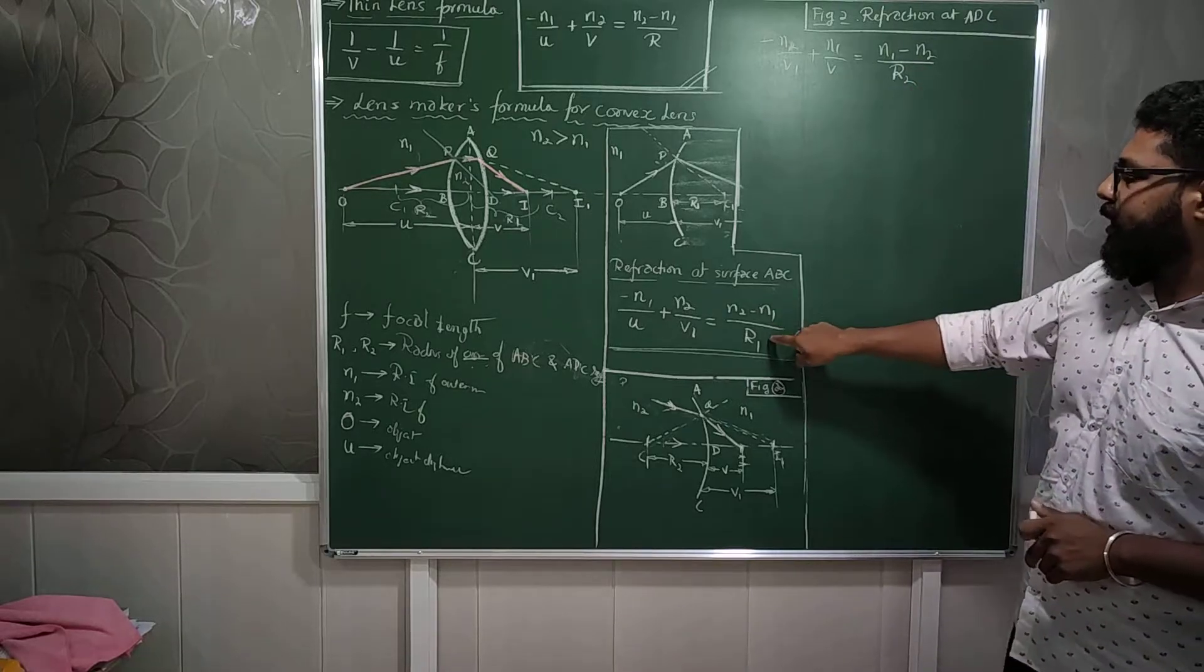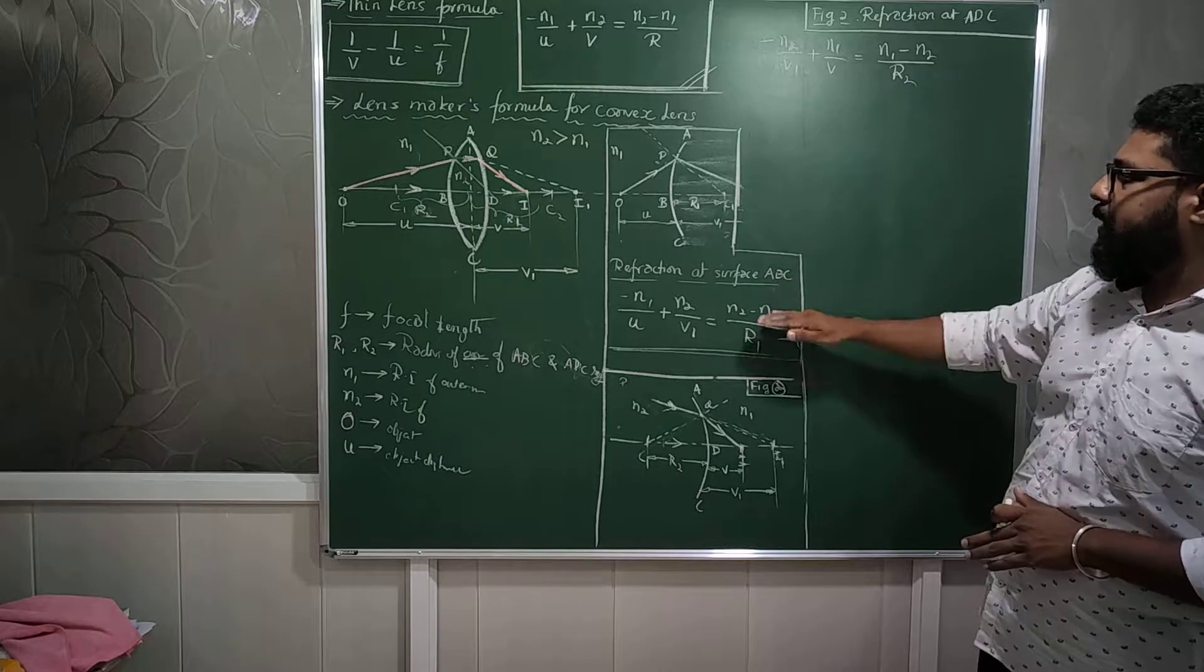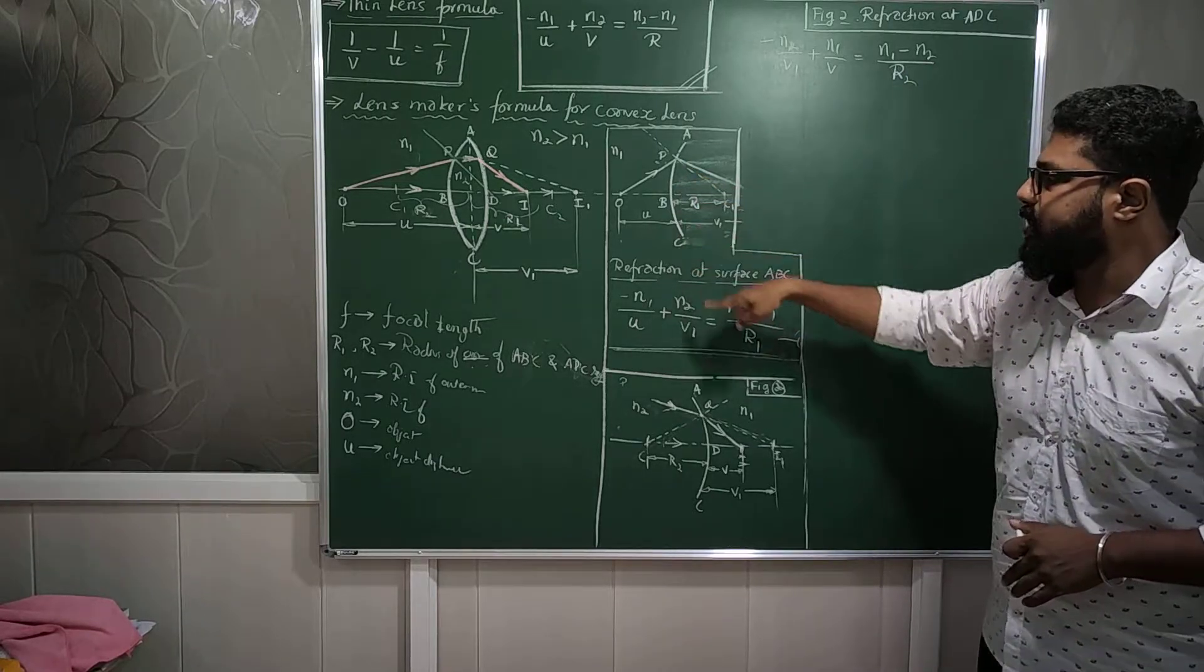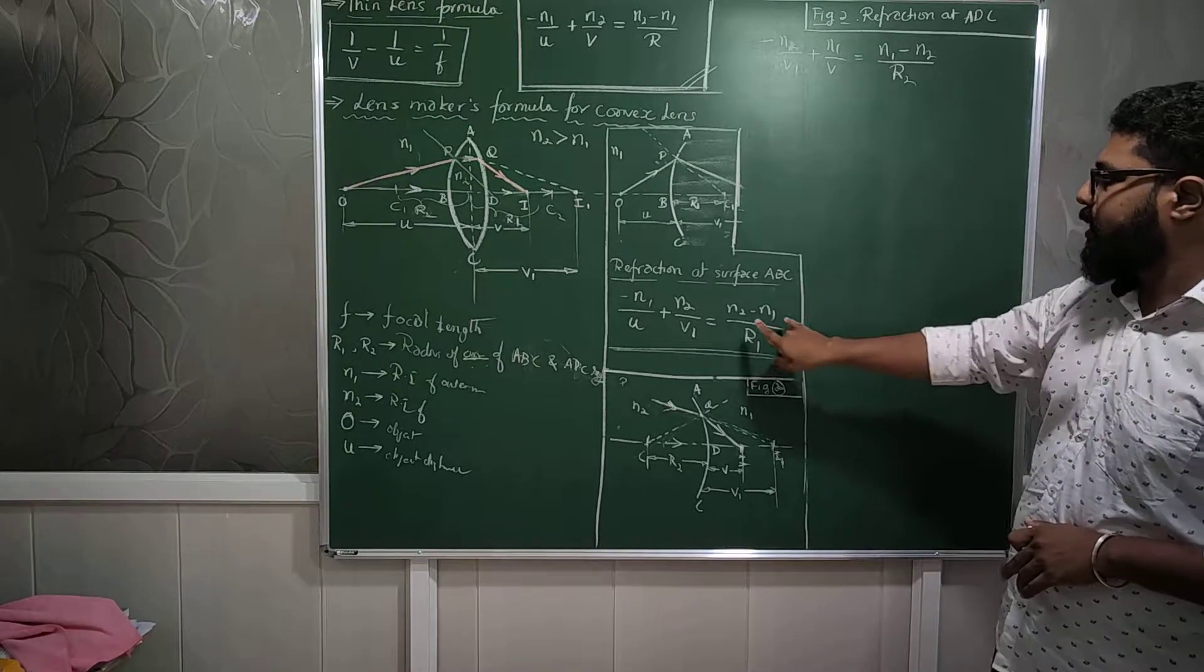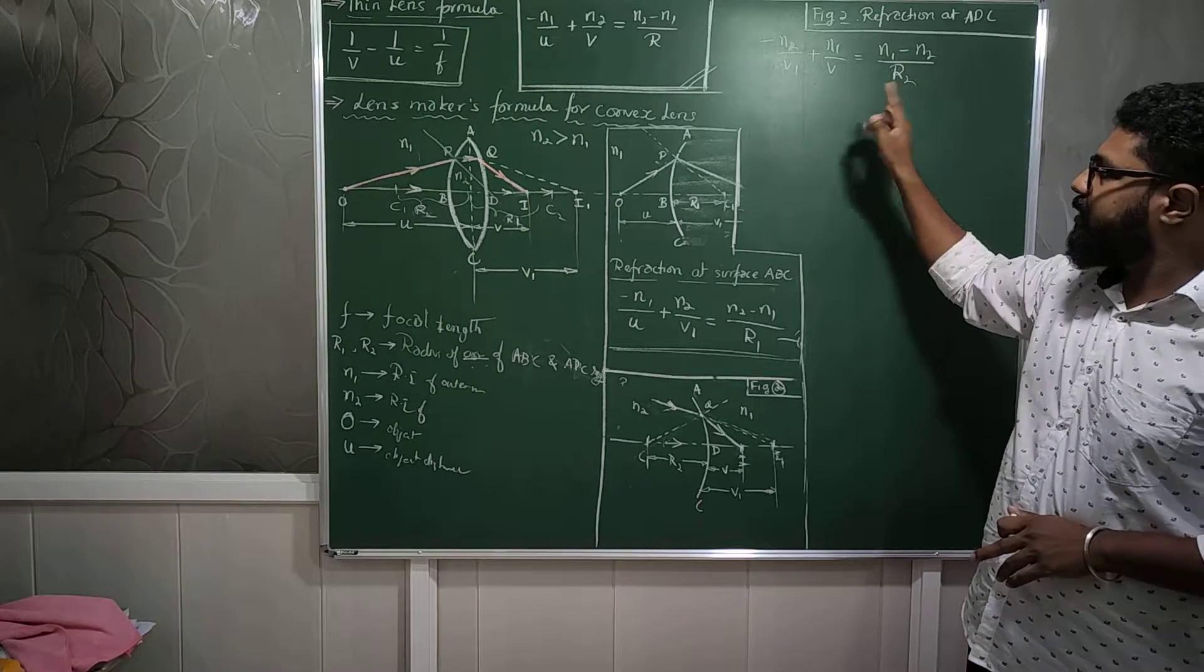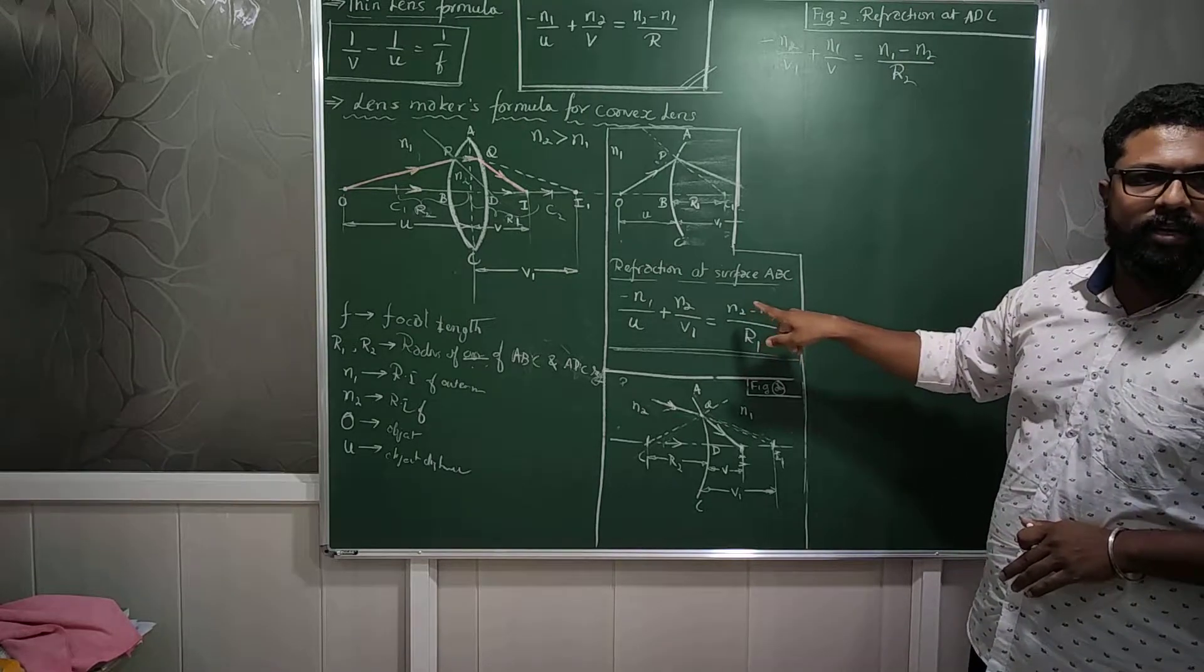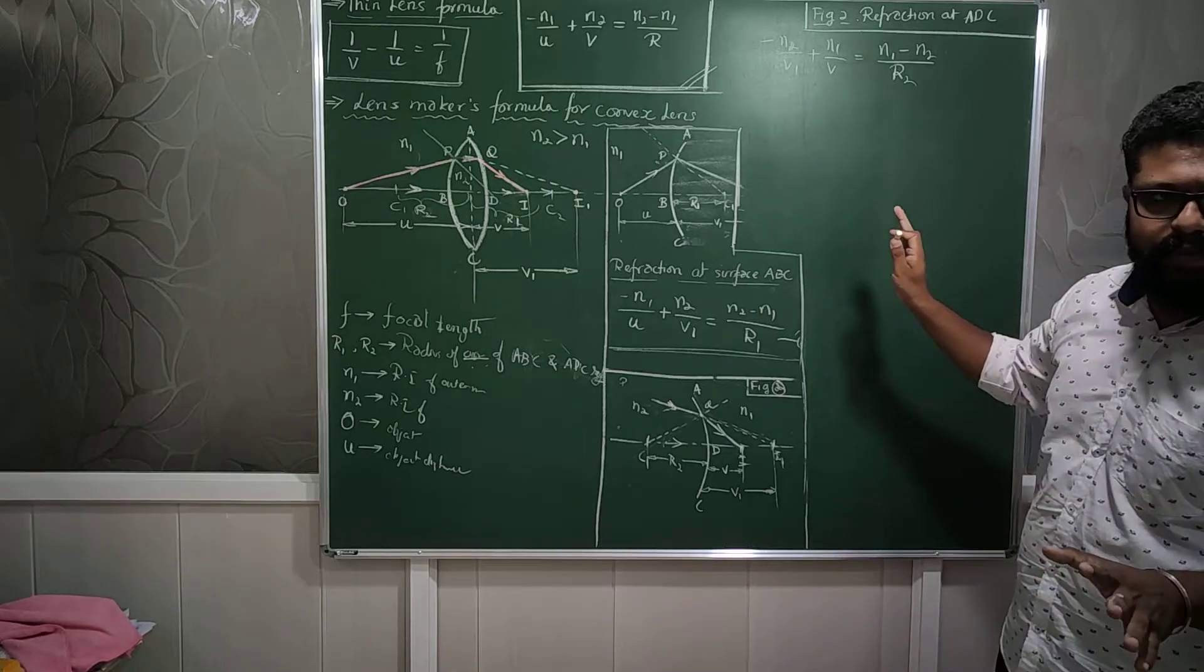Now looking at this equation and this equation, I want to make a relation between these two surfaces, that is ABC and ADC. So I will add these two equations, but before adding, this is N2 minus N1, this is N1 minus N2. I will interchange their positions so that something becomes common in the two equations for my calculation purpose.